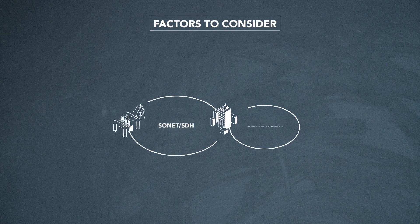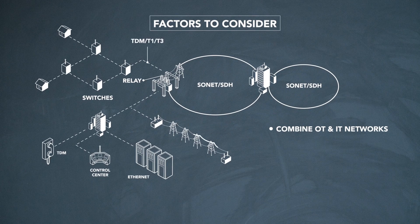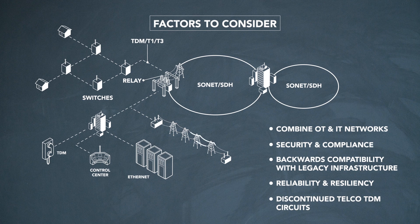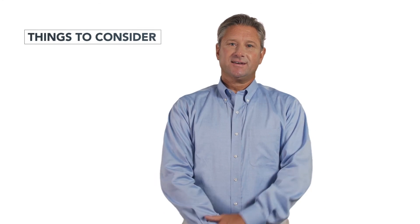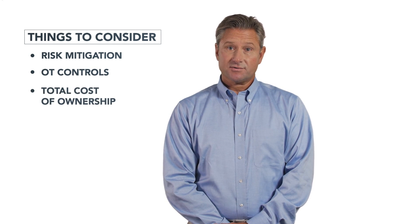There are many factors to consider when introducing a network architecture change. The first consideration is whether to combine the OT and the IT elements into a single network. Then there's security and compliance and backwards compatibility with legacy OT infrastructure. Network reliability and resiliency is critical. How does a utility deal with the advent of telcos discontinuing many of the TDM circuits that utilities rely on today? And finally, a utility needs to consider risk mitigation, operational controls, and total cost of ownership.